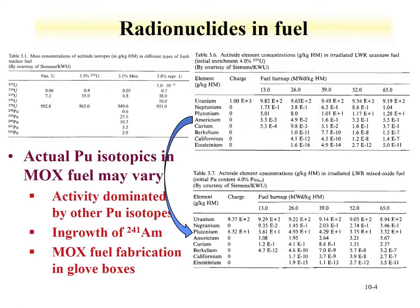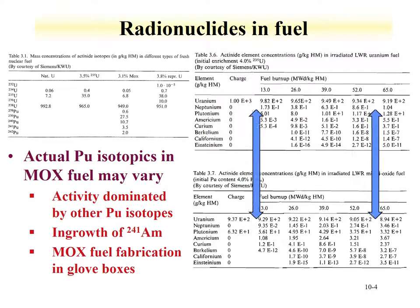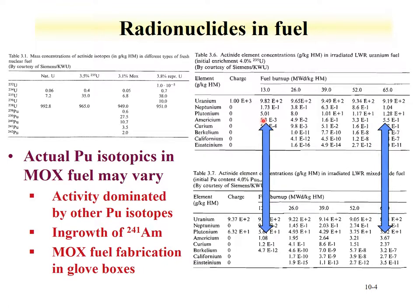Looking at the tables shown here, we see differences in actinide concentration. The top table has no initial plutonium; the bottom table is MOX fuel with an initial level of plutonium. One manifestation is the amount of americium. If we look at grams per kilogram heavy metal as a function of burn-up — without plutonium present, we have milligram quantities of americium, whereas if plutonium is present, we have gram quantities.